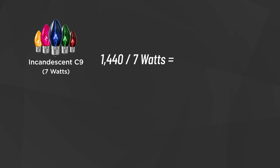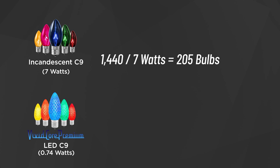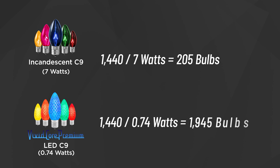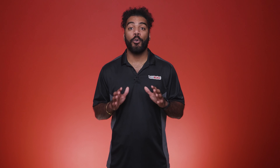Let's say you want to use incandescent C9s. Due to their wattage, you would only be able to use 205 bulbs. However, if you chose LED vivid core premium C9 bulbs instead, you could safely use 1,945 bulbs. LED bulbs are definitely the better choice for having more bulbs per circuit due to their lower wattage.